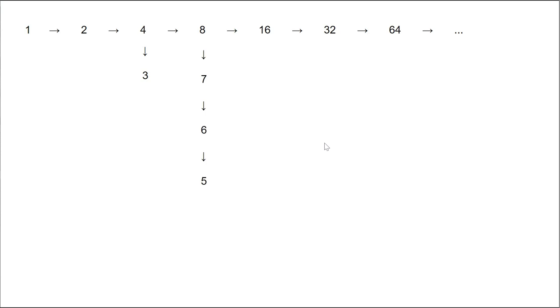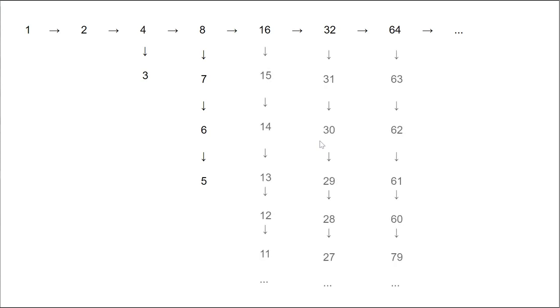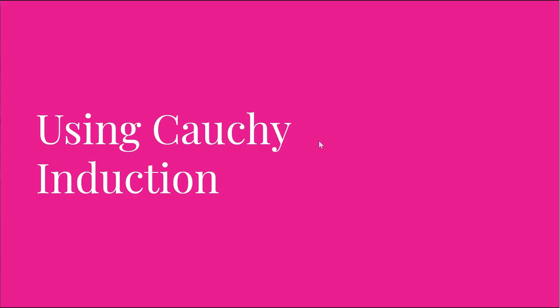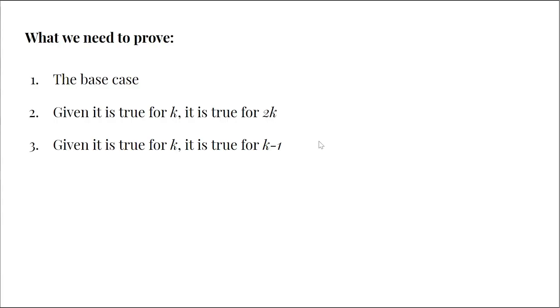So since 4 is true, then 3 is true. And since 8 is true, 7 is true. Since 7 is true, 6 is true. Since 6 is true, 5 is true. We can keep doing this until we fill all the gaps between the powers of 2, and so we've proven it for all positive integers. There are three things we need to prove: the base case, given it's true for k it's true for 2k, and given it's true for k it's true for k − 1.